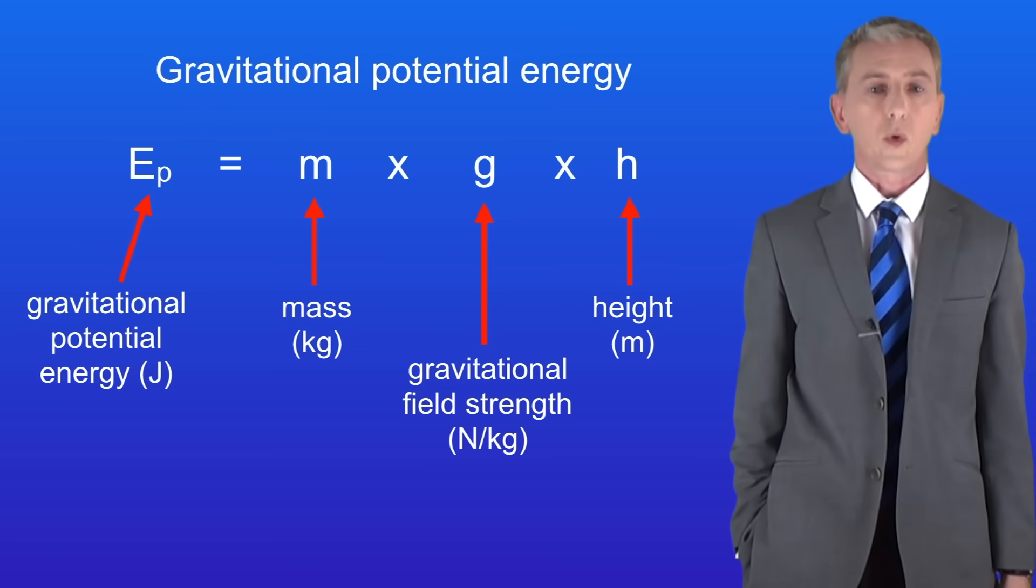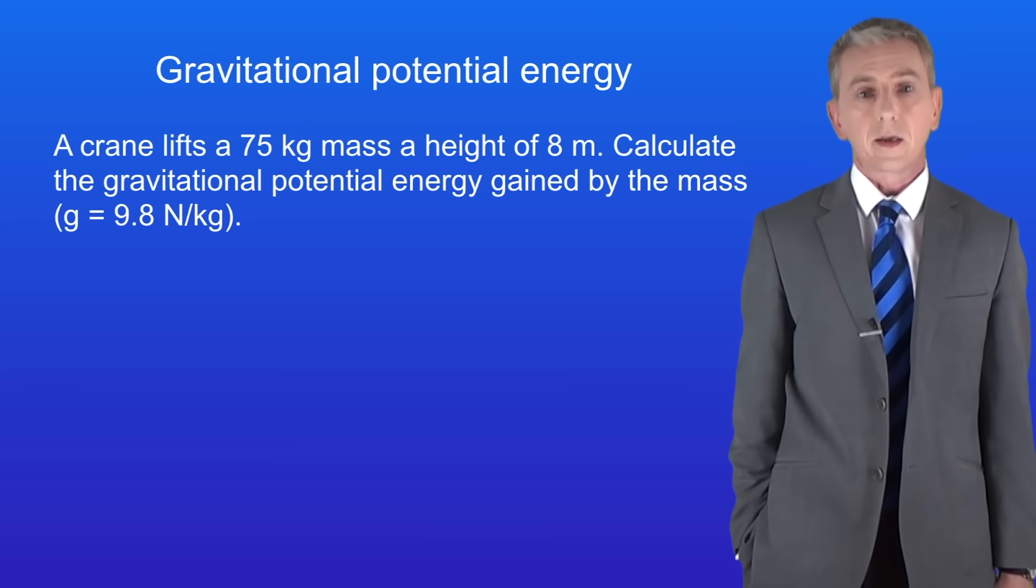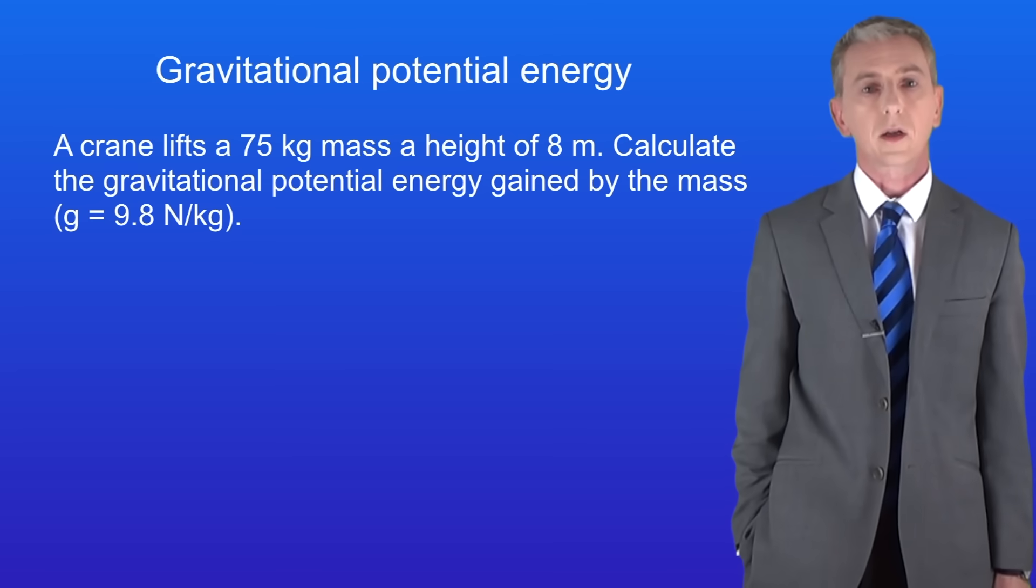Let's take a look at a sample question. A crane lifts a 75 kilogram mass a height of 8 meters. Calculate the gravitational potential energy gained by the mass. The value of the gravitational field strength is 9.8 newtons per kilogram.